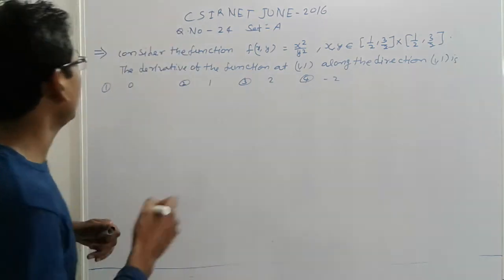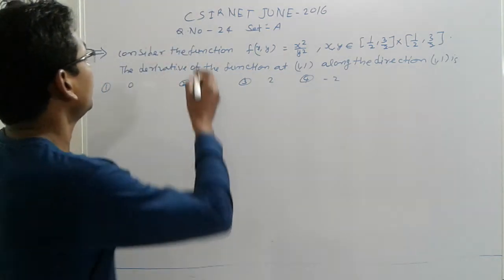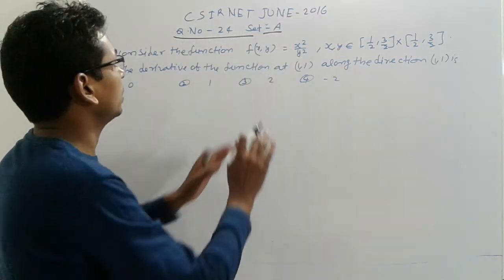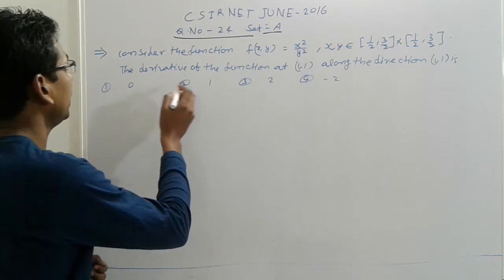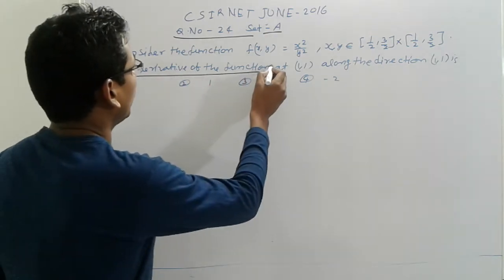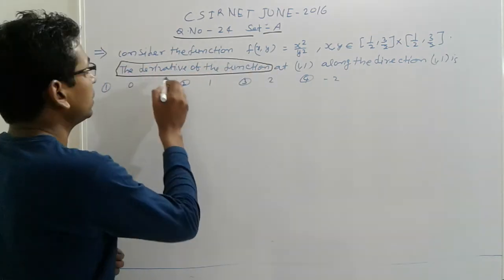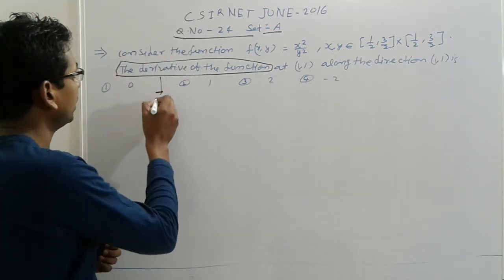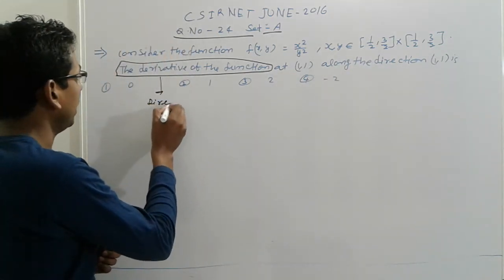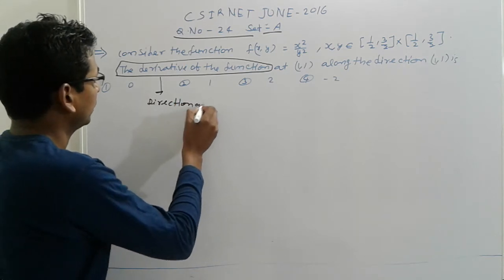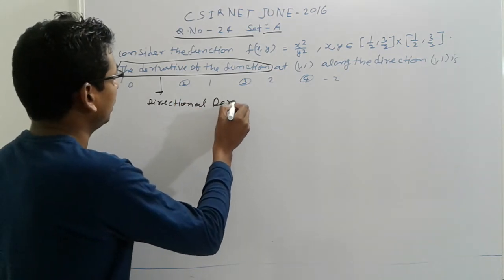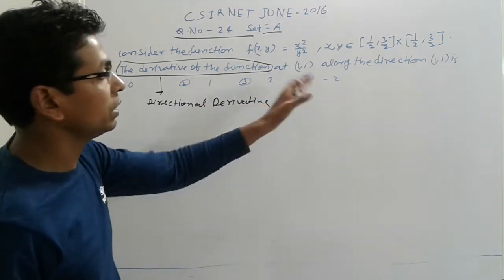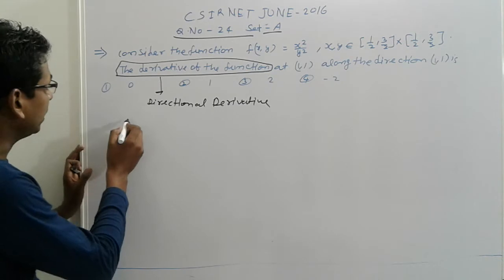The question says: consider the function. We need to find the derivative of the function — that means find the directional derivative at a given point along a given direction.